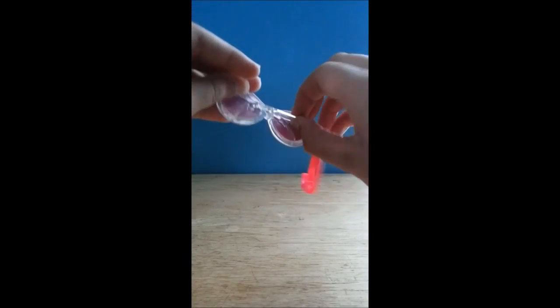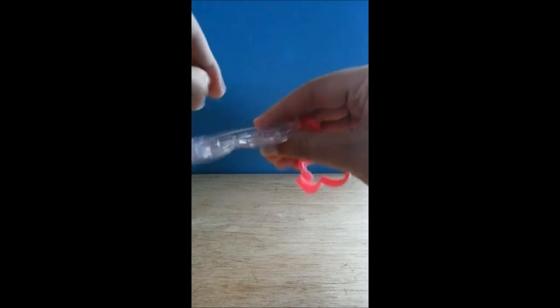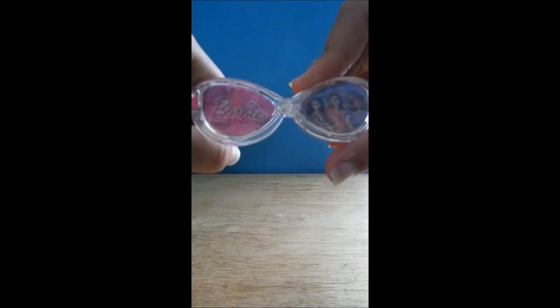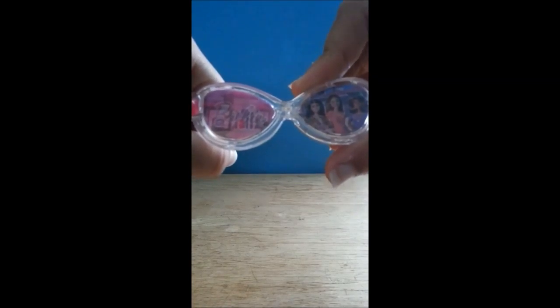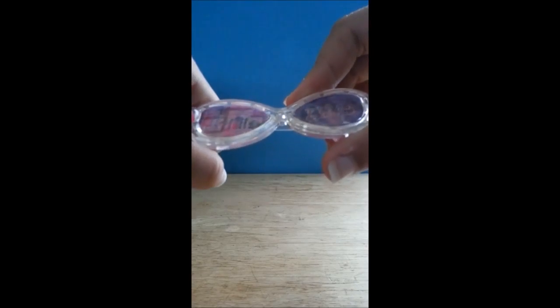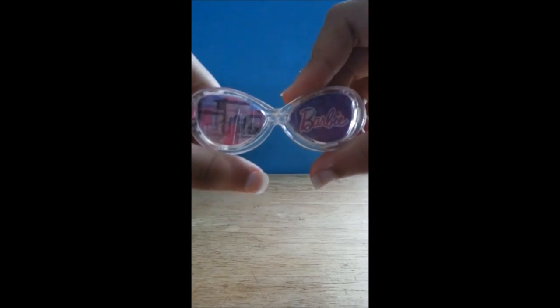Well, these are the sunglasses. You cannot open them. And these are the pictures. So first it's the Dream House and Barbie. Next it's Raquel, Teresa, Nikki, and Barbie's logo. There's also Barbie in one picture.